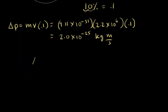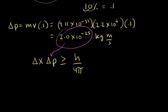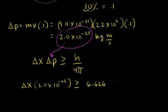Now let's plug this into the uncertainty principle. The uncertainty in the position of the electron times the uncertainty in the momentum must be greater than or equal to Planck's constant divided by 4 pi. So we have: delta x times 2.0 times 10 to the negative 25 is greater than or equal to 6.626 times 10 to the negative 34 divided by 4 pi.